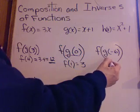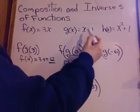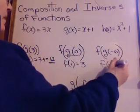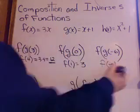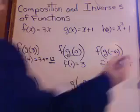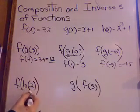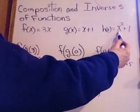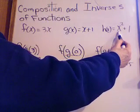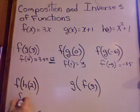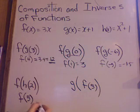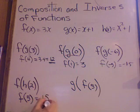Okay. g of negative 6, negative 6 plus 1, negative 5. f of negative 5, 3 times 5, negative 15. Okay. H of 2. Go here. 2 squared plus 1. 2 squared is 4 plus 1 is 5. So, h of 2 is 5. So, replace it. So, now I have f of 5. Go to the f equation. 3 times 5, 15.